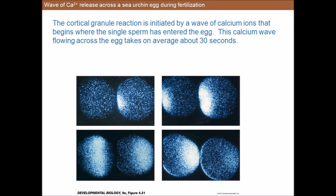The release of calcium from intracellular storage can be monitored visually using calcium-activated luminescent dyes such as aequorin — like GFP, a protein isolated from luminescent jellyfish — or fluorescent dyes such as Fura-2. These dyes emit light when they bind free Ca²⁺. When a sea urchin egg is injected with dye and then fertilized, a striking wave of calcium release propagates across the egg.